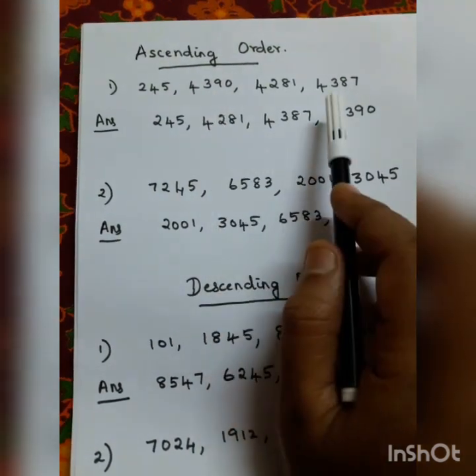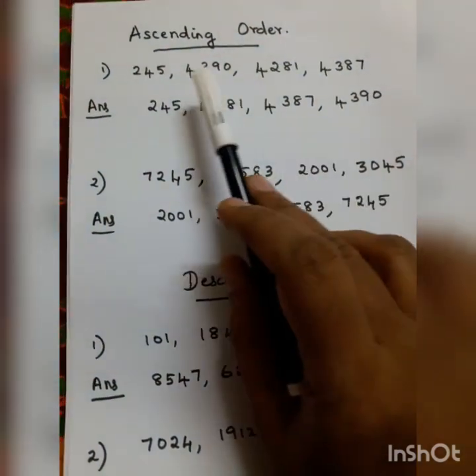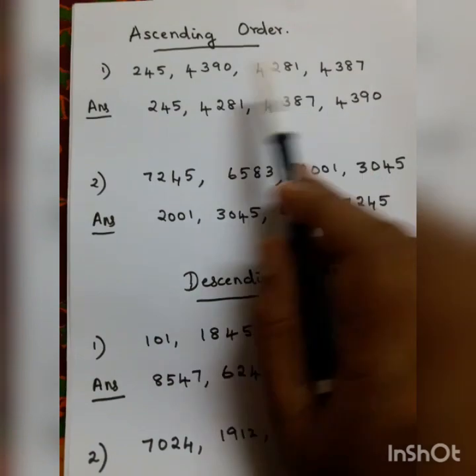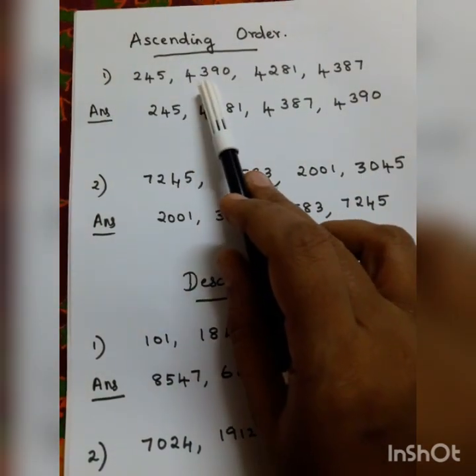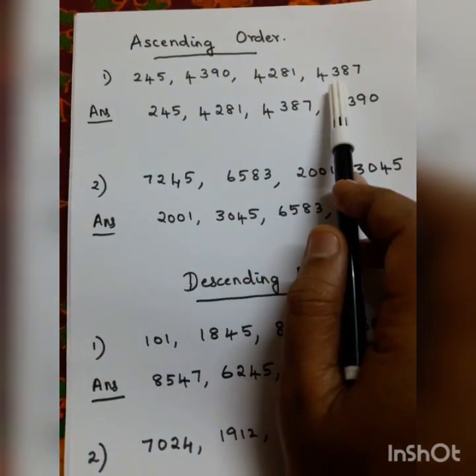The remaining numbers are 4,390 and 4,387. These numbers share the same first digits, so we need to compare further.